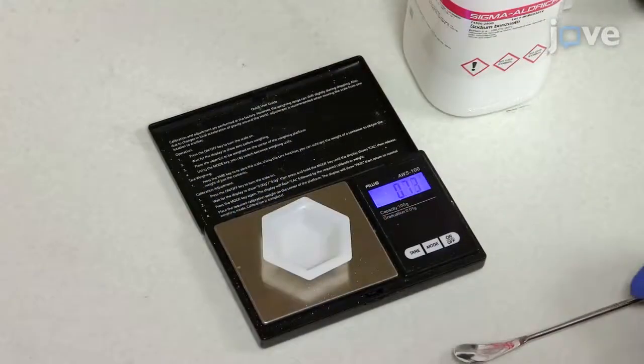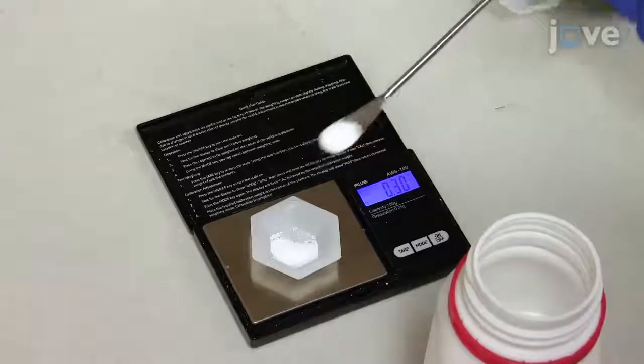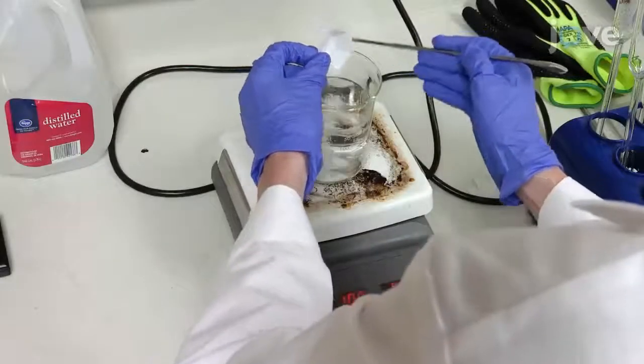Use a calibrated scale to measure 0.30 grams of sodium benzoate into a weigh boat. Add the sodium benzoate to the water solution.